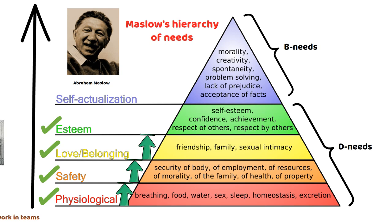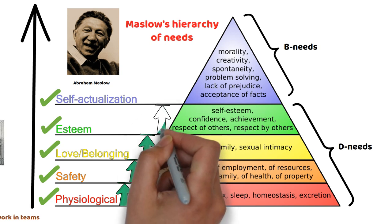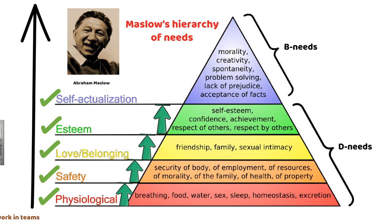Number five: self-actualization needs. At the highest level of the hierarchy, individuals seek self-actualization, which involves reaching their full potential and fulfilling their personal goals. This includes pursuing personal growth, self-discovery, creativity, and fulfilling one's unique potential. Thus, Maslow's hierarchy of needs consists of physiological needs, safety needs, social needs, esteem needs, and self-actualization needs. However, it is important to note that not all individuals follow the same path, and there may be variations and individual differences in the pursuit and fulfillment of these needs.